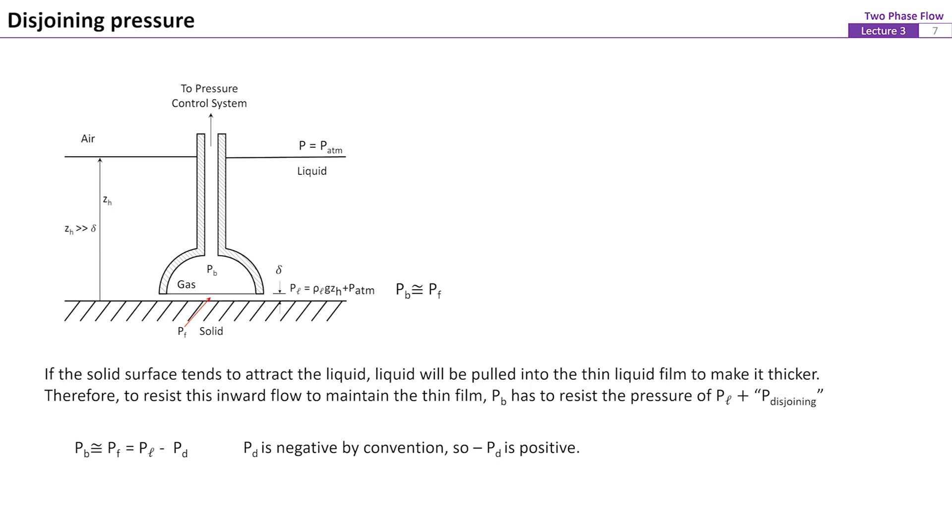In the experiment, the vapor bubble pressure, Pb, is controlled. Since the liquid vapor interface is flat, Pb must balance the liquid pressure in the thin liquid film, Pf.